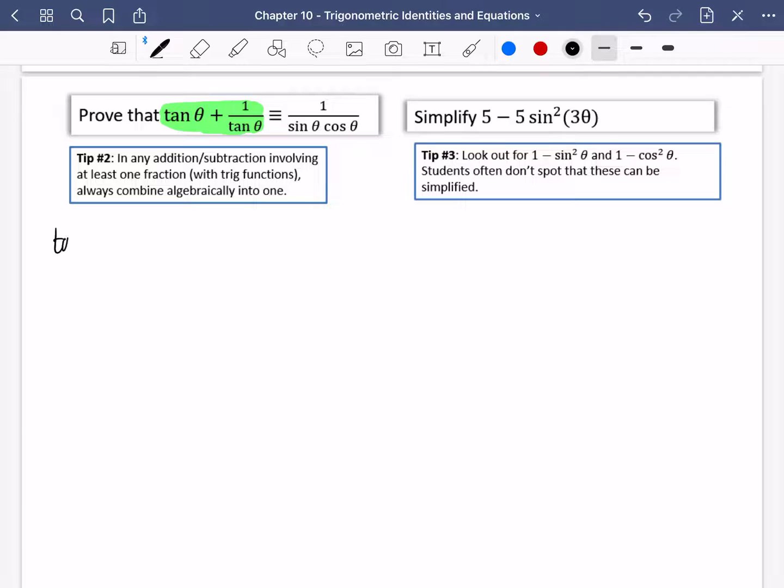So I start off by saying that tan θ plus 1 over tan θ. Okay, we're going to use tip number one as well. We're going to change tan θ into sin θ over cos θ. Now 1 over tan θ, this is the reciprocal of tan θ. And the reciprocal of tan θ must just be cos θ over sin θ. Notice how we just flipped them to get the reciprocal.